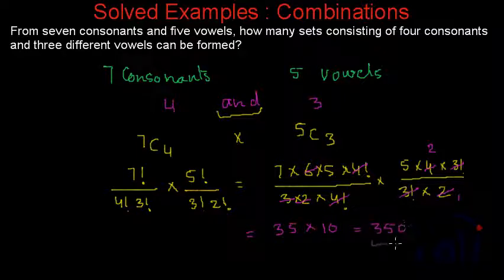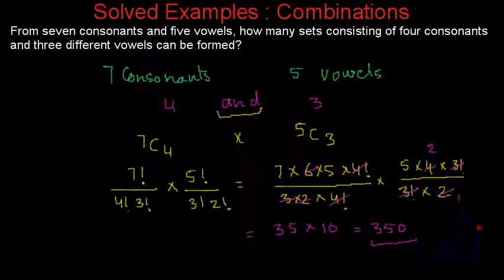So there will be 350 sets possible by selecting four consonants out of seven and three vowels out of five. This was short and sweet. After this, we have one more solved example based on combinations of a different type. Keep watching Math Smart — bye-bye till then.